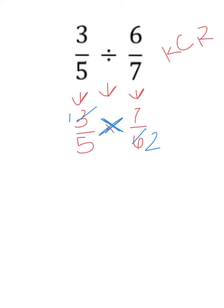Once I've cross-simplified, which just makes it a lot easier for me to multiply, now I'm going to multiply straight across the top. So multiply my numerators: 1 times 7 is 7. And my denominators: 5 times 2 is 10. And I get my final answer of 7 tenths.